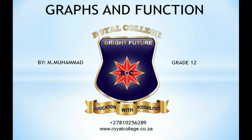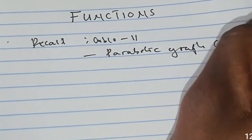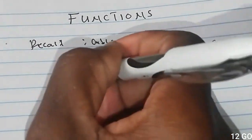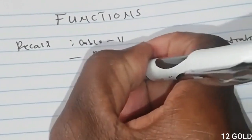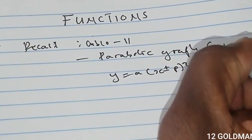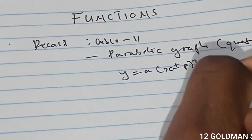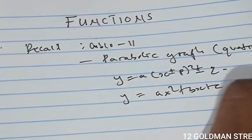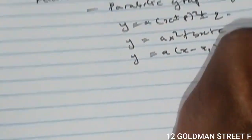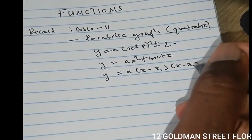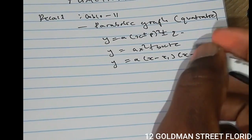In those grades we discussed the parabolic graph, or quadratic graph, given in the form y = a(x ± p)² ± q, also given as ax² + px + c, and also written as a(x - x₁)(x - x₂) where x₁ and x₂ are the x-intercepts of the graph.